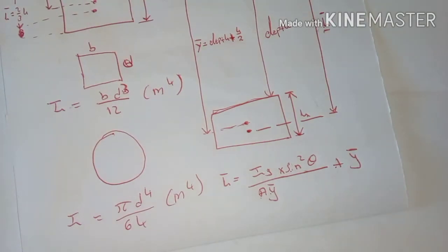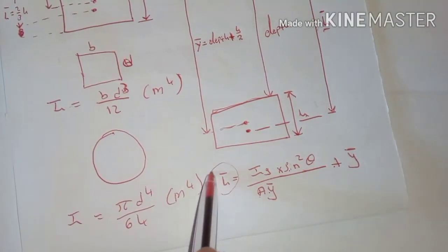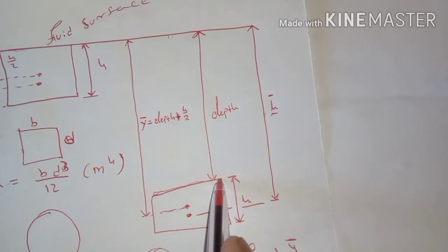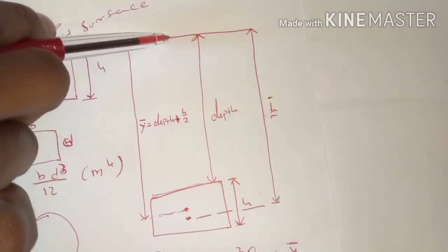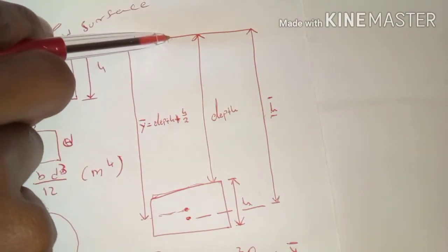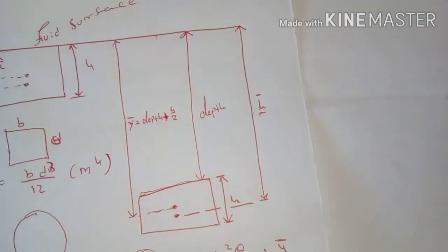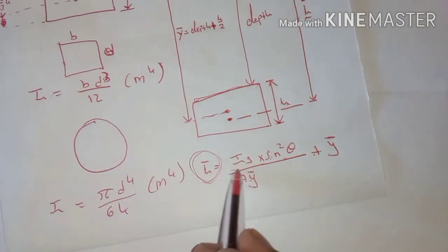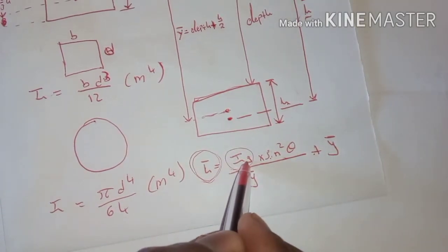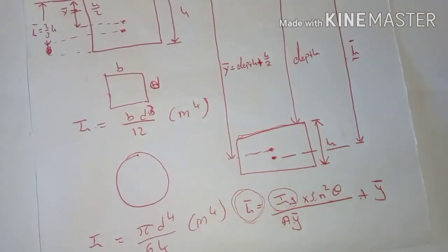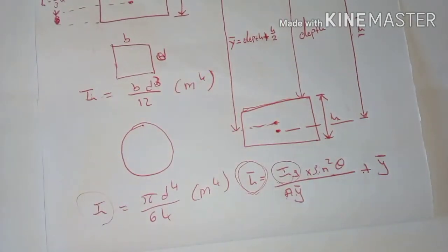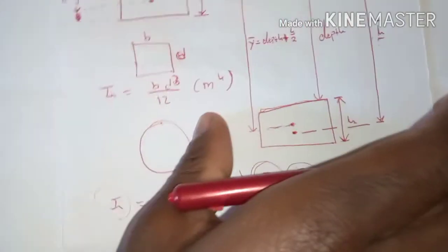The only thing that is changing is the formula to calculate the center of pressure, because now we are not taking our center of pressure from the top of the object, but from the surface of the fluid under which the object is submerged. This leads us to having the moment of inertia in our formula, and we must calculate for it using these two formulas. Now let's do an exercise to see how we apply this concept.